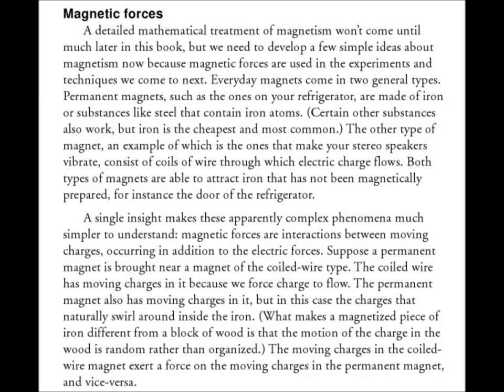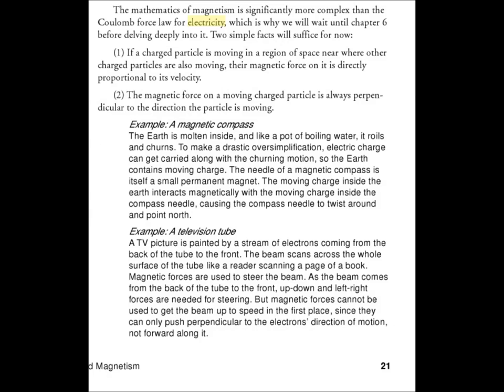What makes a magnetized piece of iron different from a block of wood is that the motion of the charge in the wood is random rather than organized. The moving charges in the coiled wire magnet exert a force on the moving charges in the permanent magnet, and vice versa. The mathematics of magnetism is significantly more complex than the Coulomb force law for electricity, which is why we will wait until chapter 6 before delving deeply into it. Two simple facts will suffice for now.